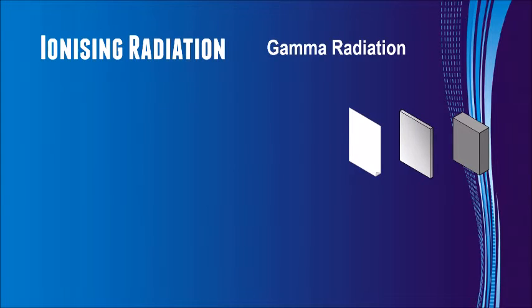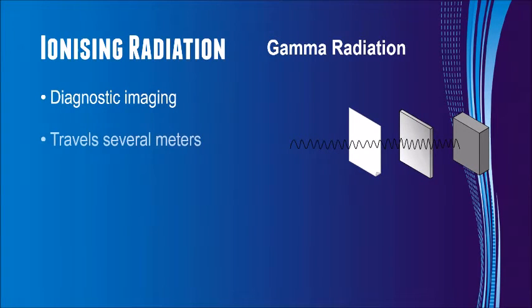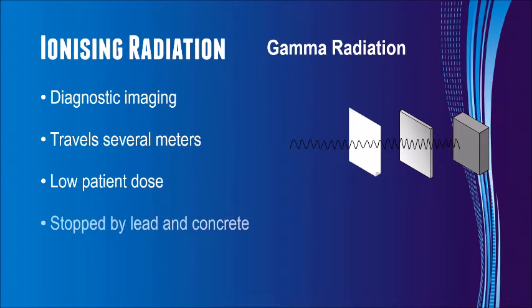Gamma radiation is used primarily for diagnostic imaging. Gamma rays are able to travel distances of up to several metres and this allows them to be easily imaged with a gamma camera whilst delivering minimal radiation dose to the patient. In a nuclear medicine department, lead sheeting and concrete walls are used to protect other people from excess radiation.